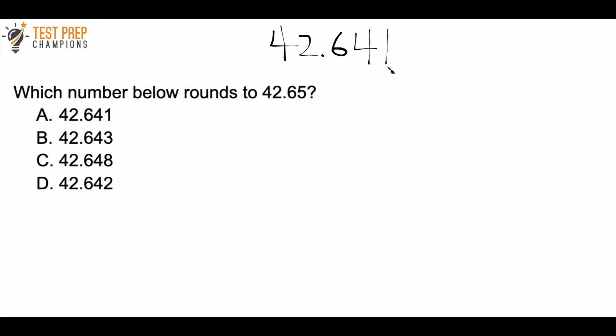It's a bit of a tongue twister sometimes to say. But the idea here is that for each answer choice, I want to look at the number to the right of the 4. If this number is a 5 or greater, it's going to round up to 42.65. If this number in the thousandths place — directly to the right of the 4 — is smaller than 5, then it's not going to round up to 42.65. So for 42.641, this does not round up to 42.65.